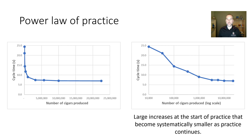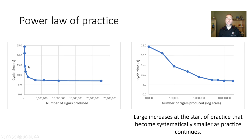The power law of practice is the mathematical relationship we see with skill acquisition over long periods of time — large increases at the start of practice, and improvements that get smaller and smaller the more the individual practices. This applies over an individual's career: huge improvements when LeBron James first played basketball, and only tiny improvements per additional year now.